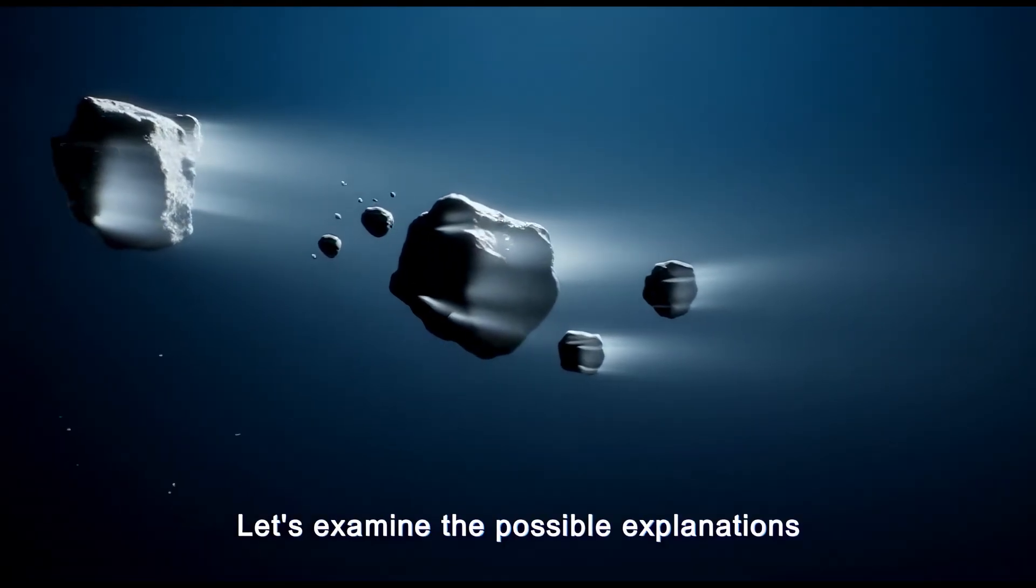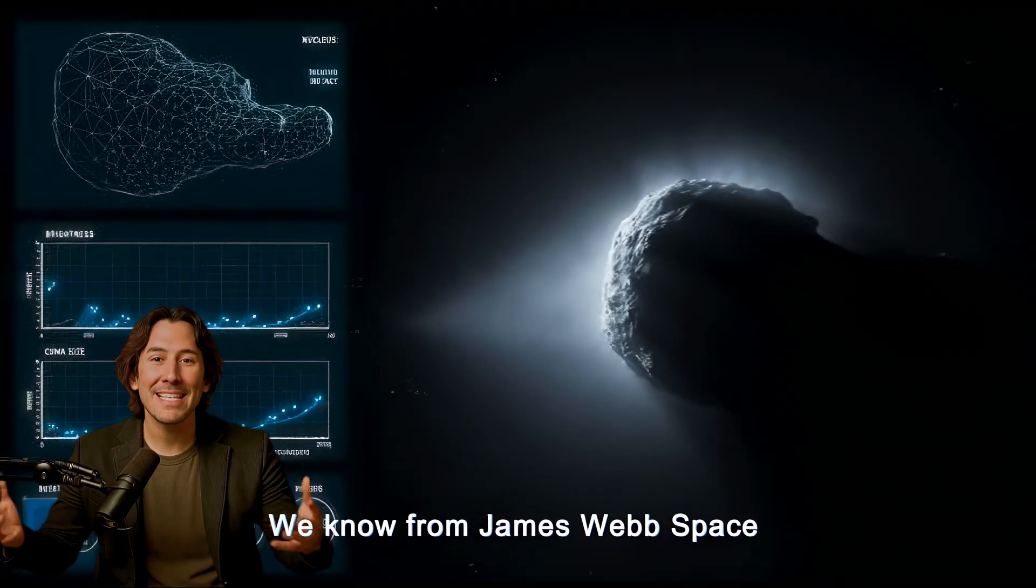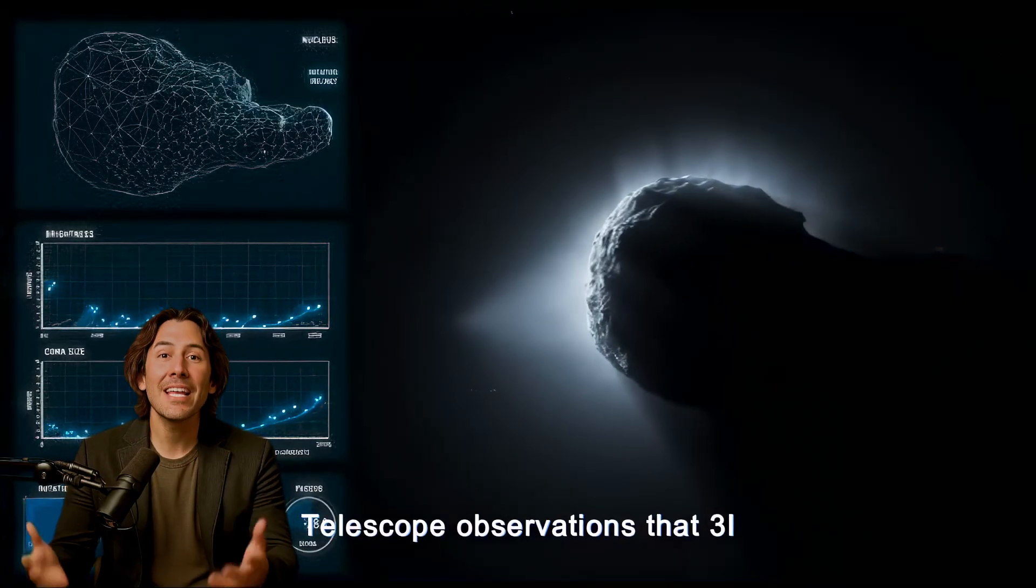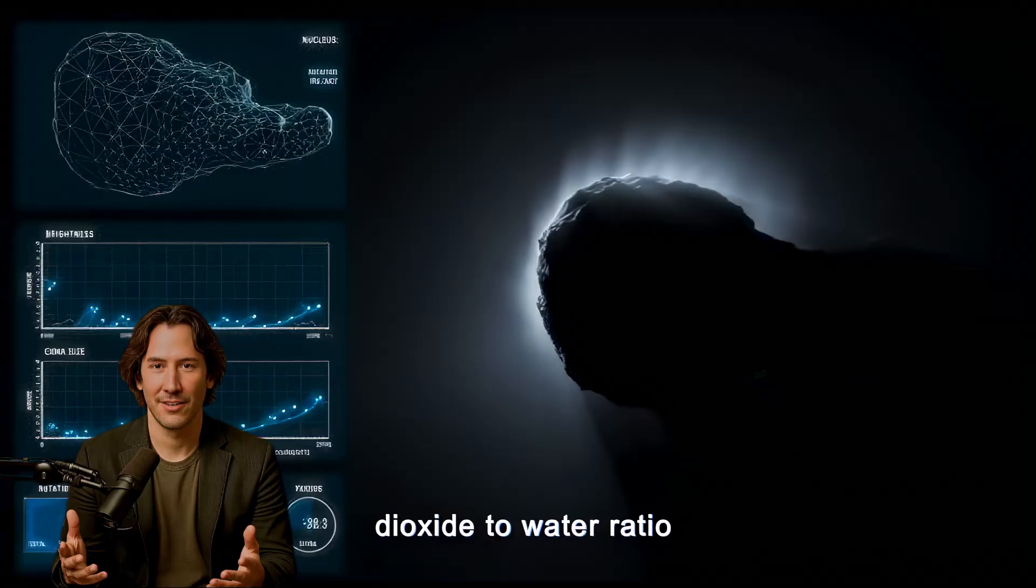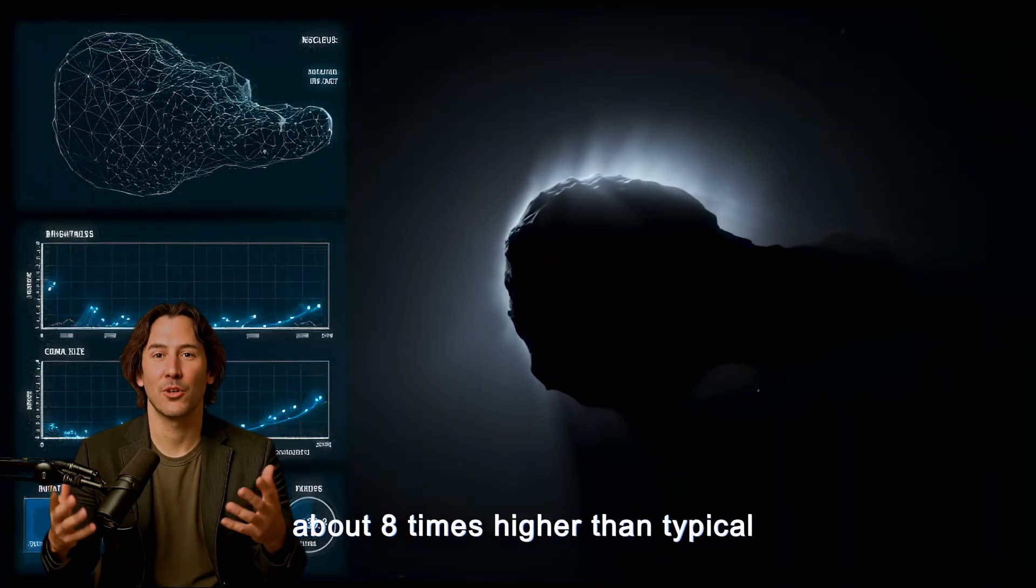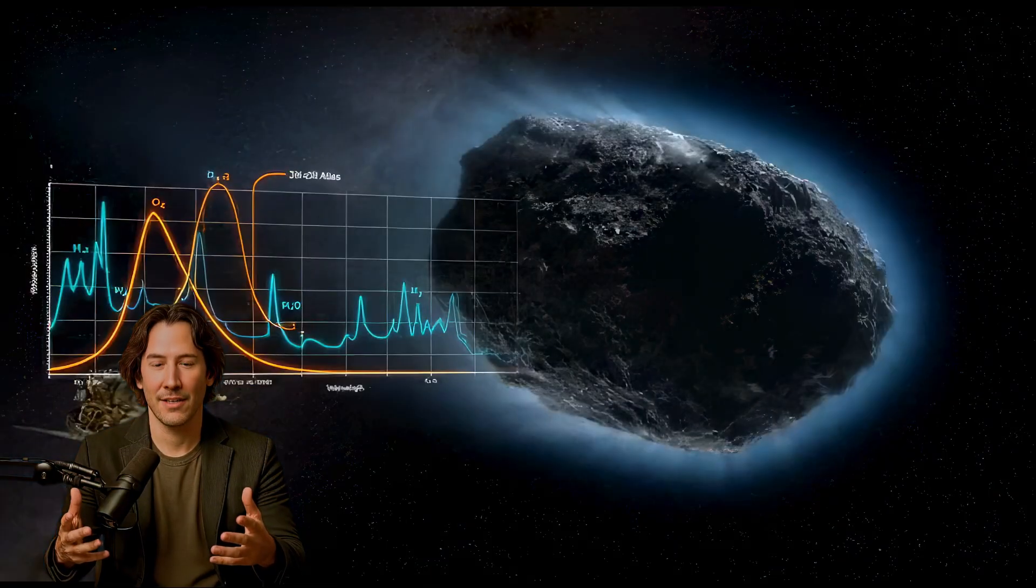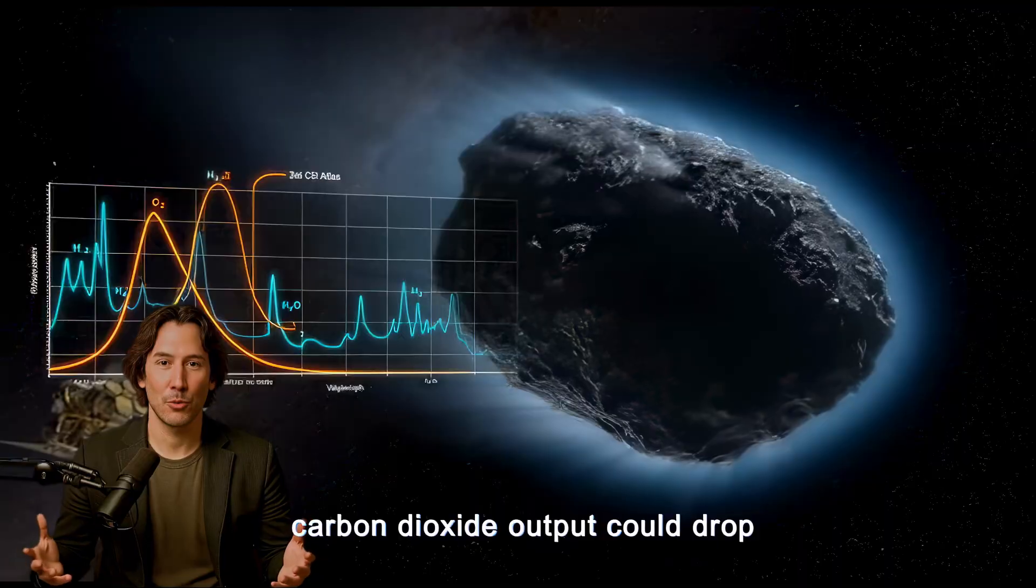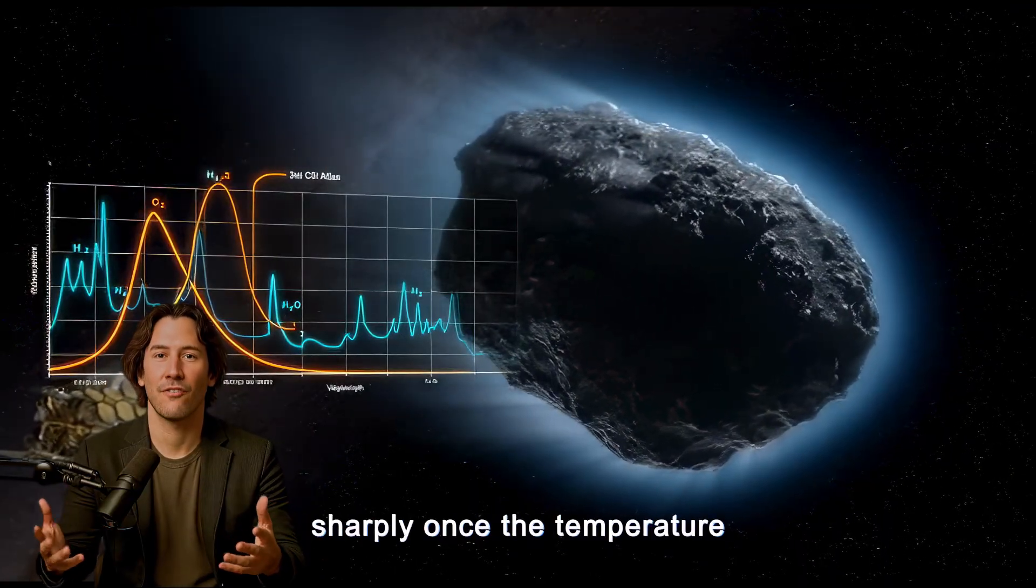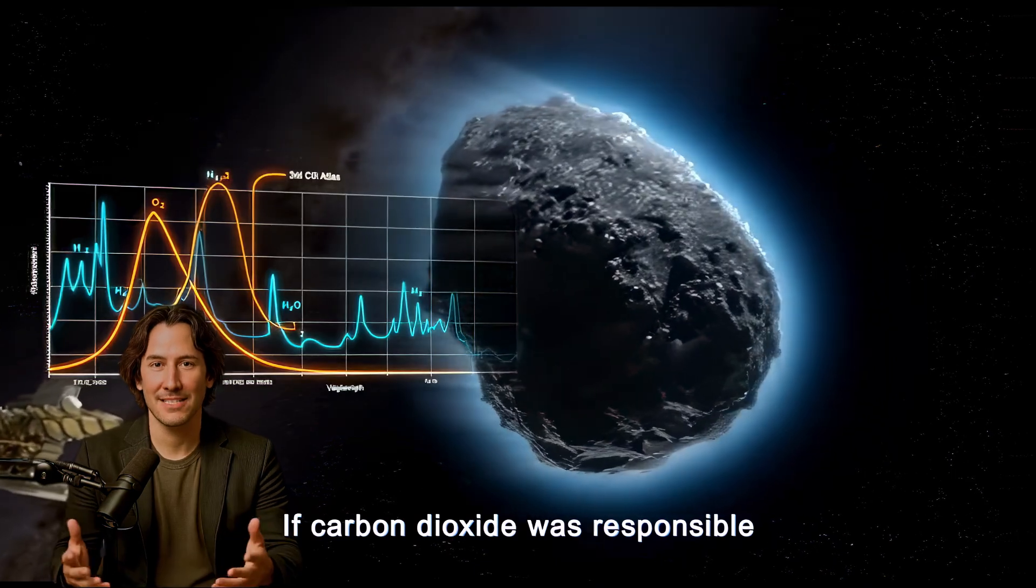Let's examine the possible explanations, starting with surface chemistry. We know from James Webb Space Telescope observations that 3i Atlas has an unusually high carbon dioxide to water ratio, about eight times higher than typical comets. Carbon dioxide sublimates at lower temperatures than water ice. This means that as the comet recedes from the sun, carbon dioxide output could drop sharply once the temperature falls below its sublimation threshold.